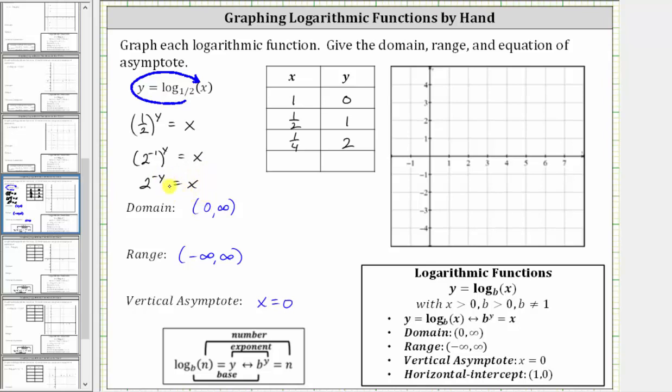In this form, notice how if we let y equal negative two, x is equal to two raised to the power of the opposite of negative two, which is two squared or four.